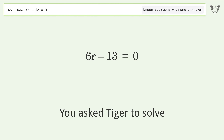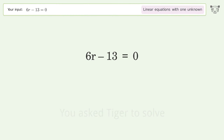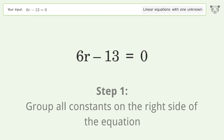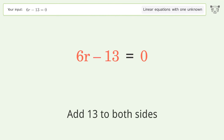You asked Tiger to solve this — it deals with linear equations with one unknown. The final result is r equals 13 over 6. Let's solve it step by step. Group all constants on the right side of the equation and add 13 to both sides.